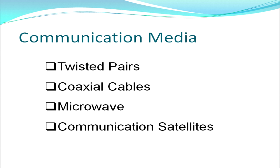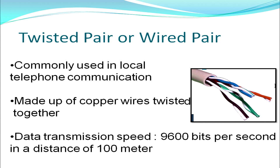The first is the twisted pair, also called wired pair — a very commonly used, efficient, cheap, but less efficient transmission medium. It is generally used in local telephone communication. There are two or more copper wires twisted together. The data transmission speed is quite low and there is a problem of noise, so they cannot be used for very large distances or complex networks.